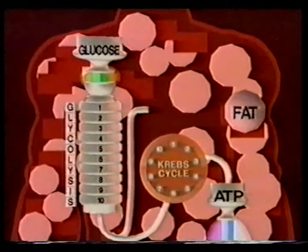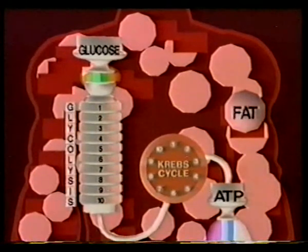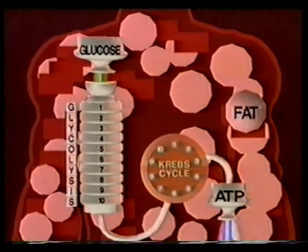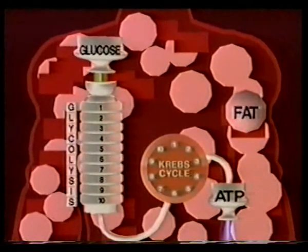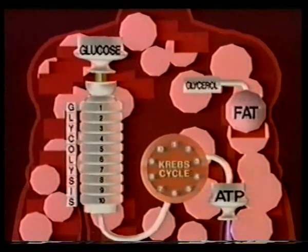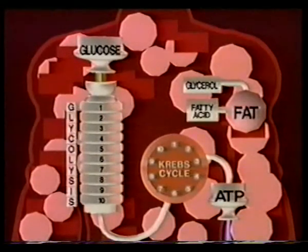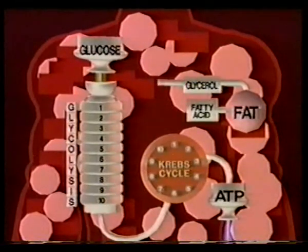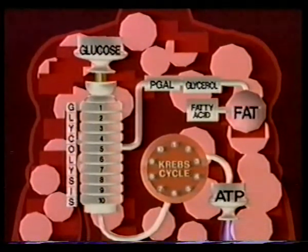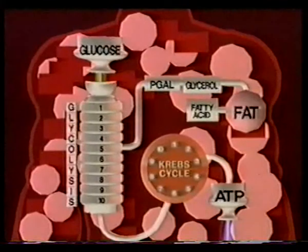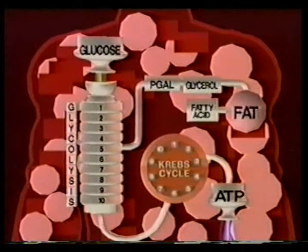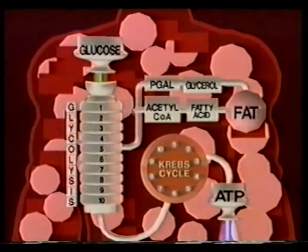The conscience gets the best of us, and we decide to diet. Dieting is a way of metabolizing unwanted fat to glycerol and fatty acids. The glycerol becomes PGAL and enters the glycolytic pathway. As for the fatty acids, they're converted into acetyl-CoA, which then streams into the Krebs cycle.